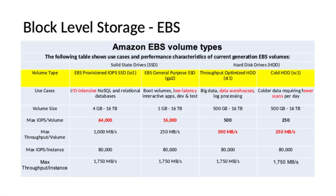Let's talk about Block Level Storage EBS. You can expect a few questions from this section. The key idea is to remember the difference between all of the EBS volume types. There are four types of Amazon EBS volume: EBS Provisioned IOPS SSD, EBS General Purpose SSD, Throughput Optimized HDD, and Cold HDD. Please try to remember the short code for each volume type. The first key point to remember is the use cases of each volume type.